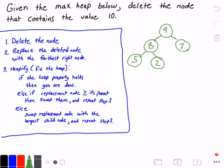All right, now we check to see if the heap property holds true. Well, nine is greater than both its children eight and seven, and of course eight is still greater than its two children and seven doesn't have any children. So our heap property holds true and we are done.